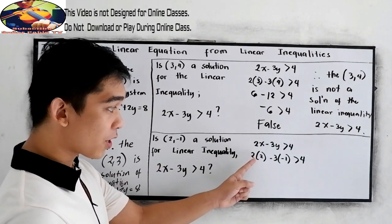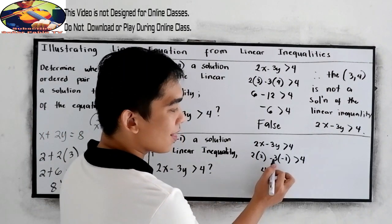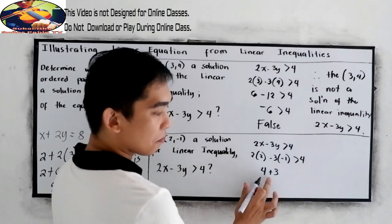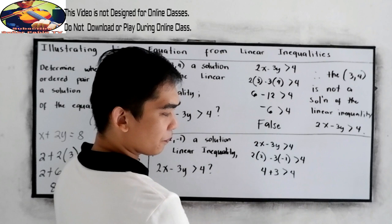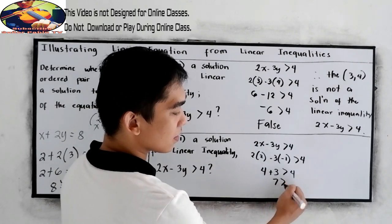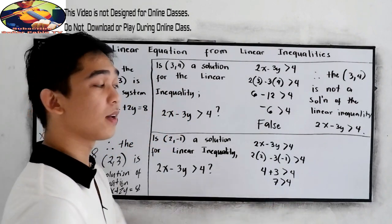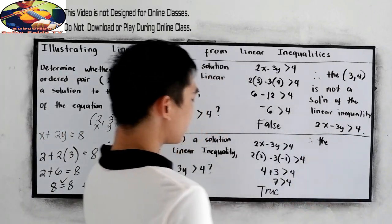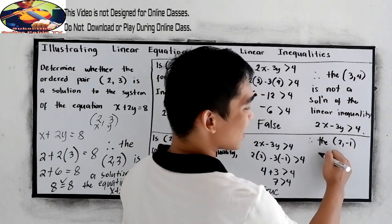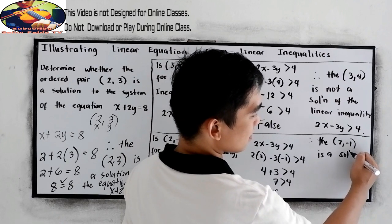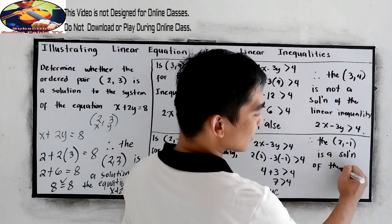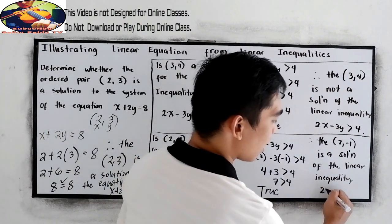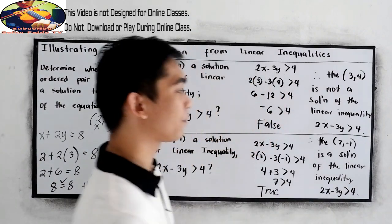Let us check: 2 times 2 gives us 4, and negative 3 times negative 1 gives us positive 3. So 4 plus 3 is 7, greater than 4. Is 7 greater than 4? Yes. This is true. Therefore, the ordered pair (2, negative 1) is a solution of the linear inequality 2x minus 3y greater than 4.